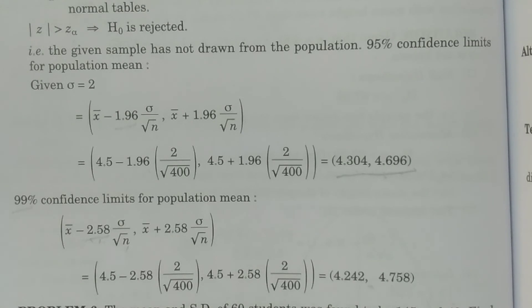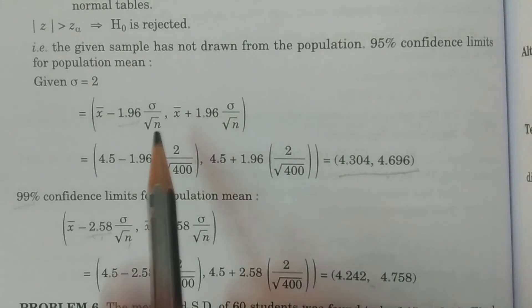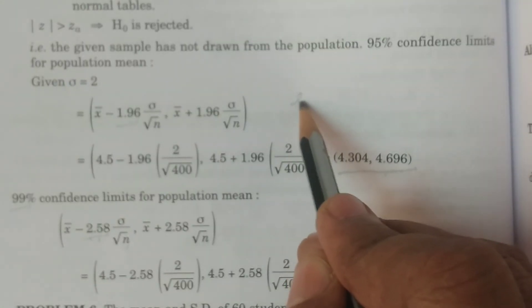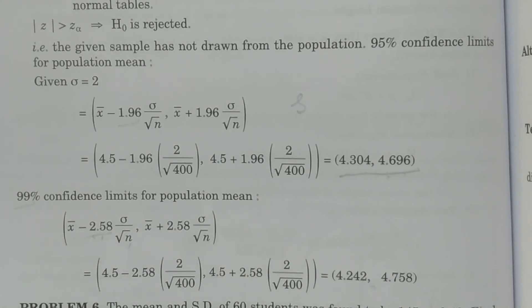That is the calculation of 95% and 99% confidence limits. If sigma is not given in the entire formula, then you always consider the sample standard deviation s in place of sigma. Thank you.